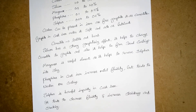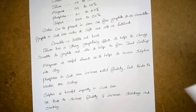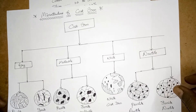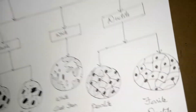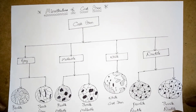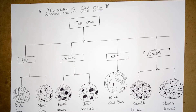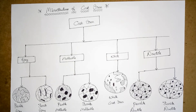Now we will move to the microstructure of cast iron. If you are getting a question regarding the microstructure of cast iron in your exam, you have to frame a table, draw the microstructure diagrams individually, give a good heading for each variety of cast iron, and explain. It will be a good presentation for you to get good marks in your examination.